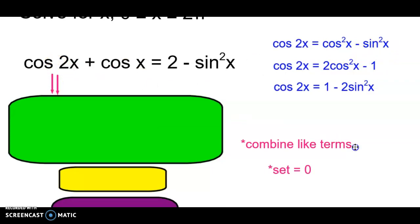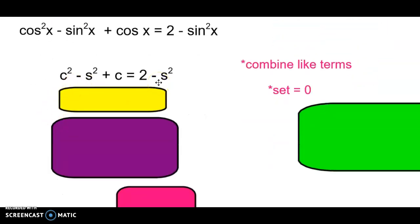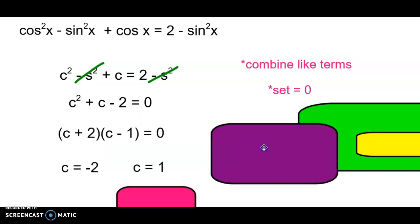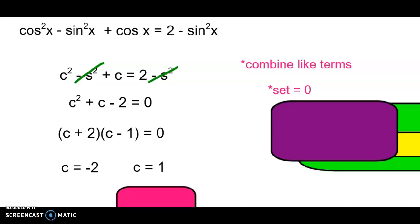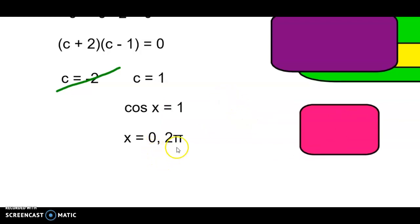We substitute cosine squared minus sine squared in for cosine of 2x. Adding sine squared to both sides eliminates the sine squared terms. We're left with a quadratic in cosine, so we set it equal to zero by moving the 2 over. Factoring gives us two factors — cosine equals negative 2, which doesn't exist on the unit circle, so we cross it off. The remaining factor gives cosine equals 1, which occurs at x = 0 and x = 2π.